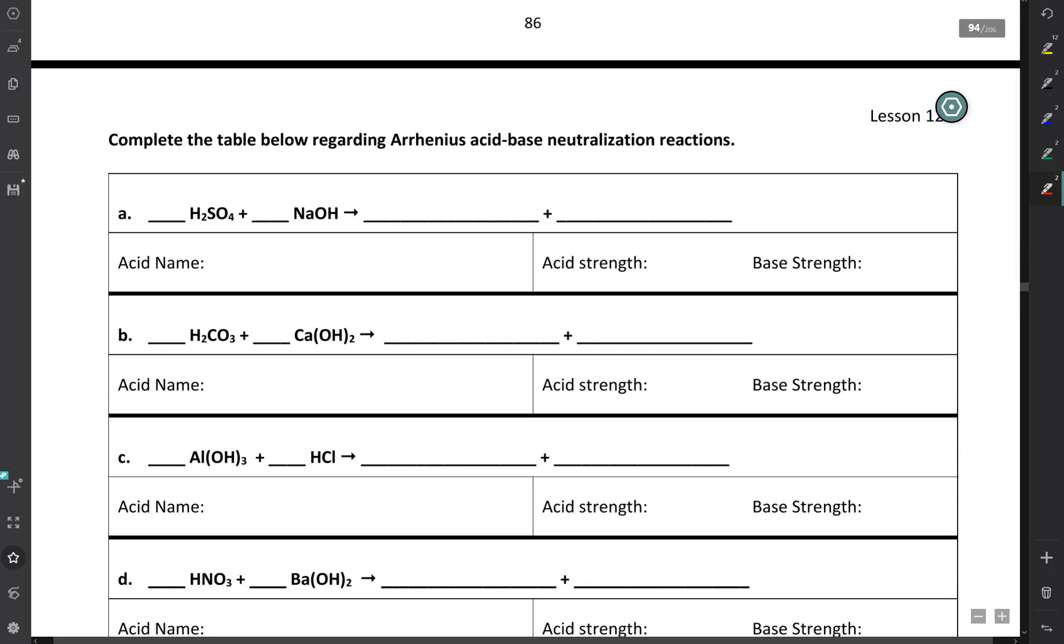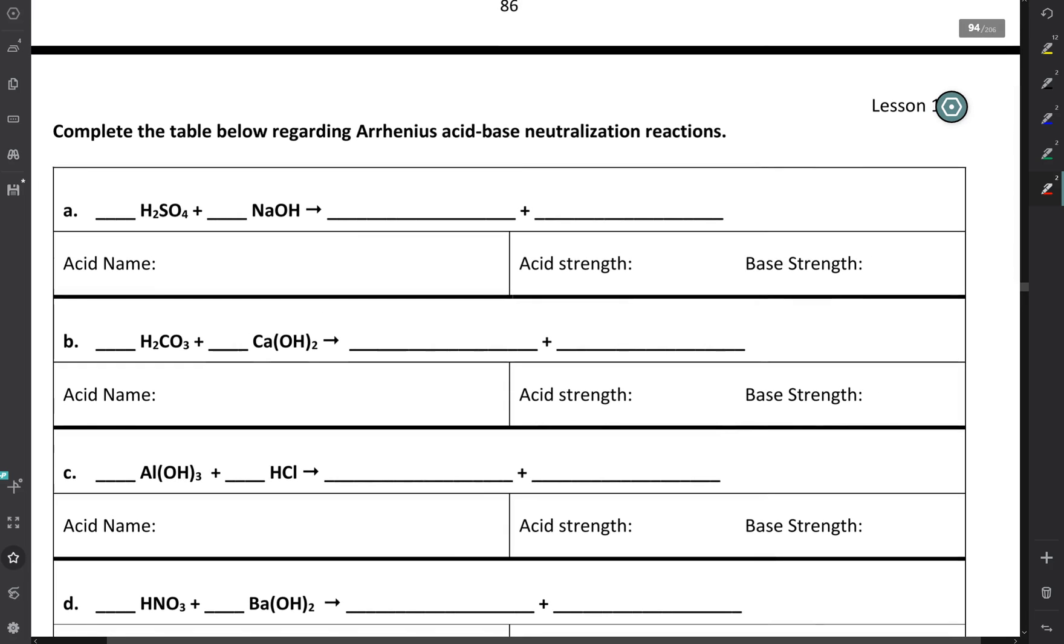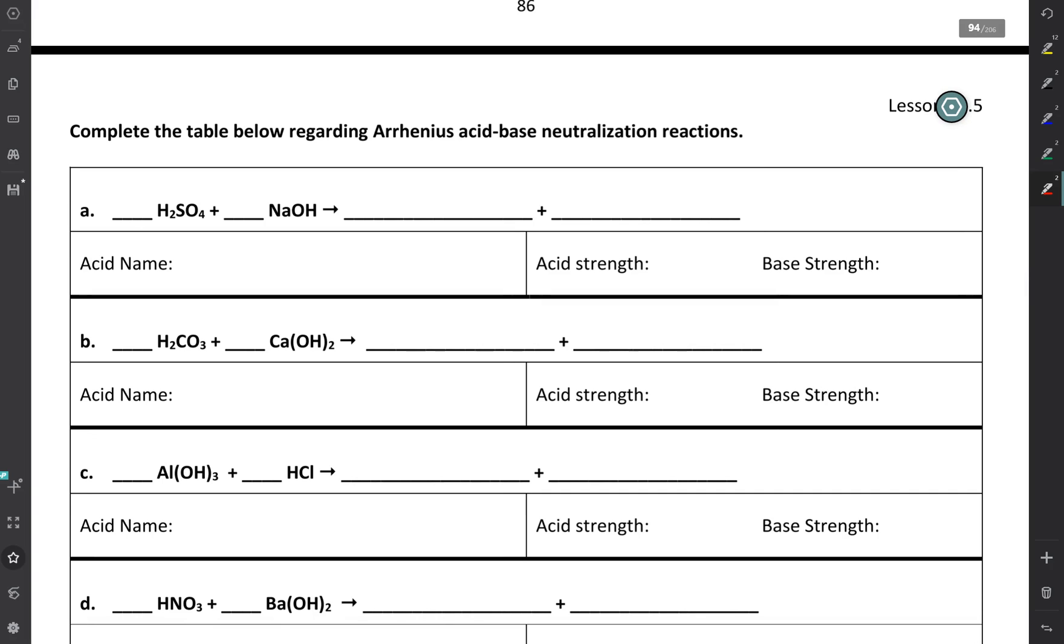All right. So you've got a whole bunch of Arrhenius acid-based neutralization reactions. And I just want to go through a couple of them with you, make sure we've got the gist of this. So we have H2SO4 reacting with NaOH. I know that I'm going to produce water. So my suggestion would be, since you know that's going to be one of your products, just write it down. The H+ comes from the acid. The OH- comes from the base. So really, the salt is going to be composed of the cation from the base and the anion from the acid. So I'm going to make sodium sulfate.